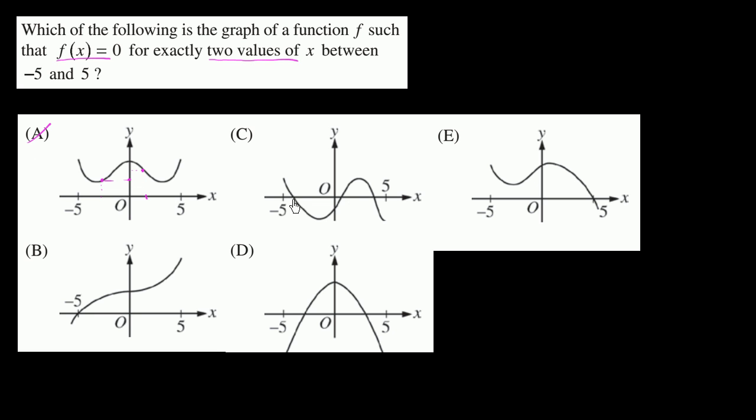This one equals 0 here, here, and here. So it equals 0 three times, or for exactly three values of x between negative 5 and 5. But they said exactly two values, so we'll rule that one out.